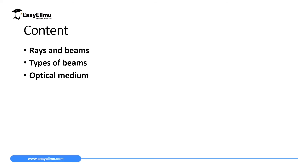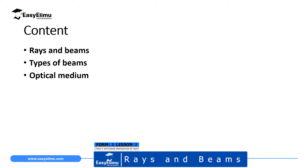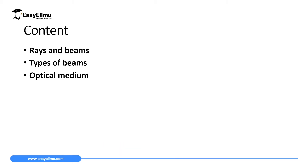By the end of this lesson I expect you to be able to define a ray and define a beam, and give the difference between a ray and a beam. Then explain the types of beams — parallel beams, convergent beams, and divergent beams — and finally discuss what we mean by optical medium.